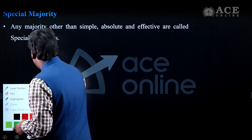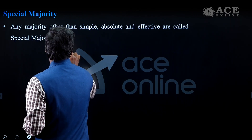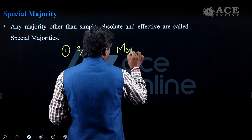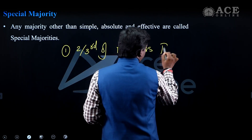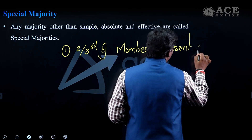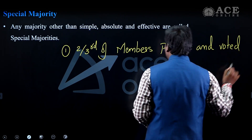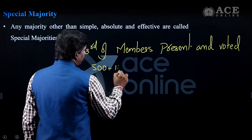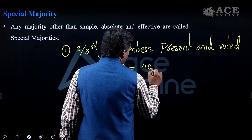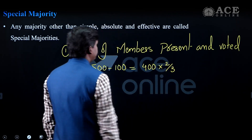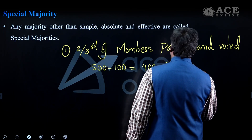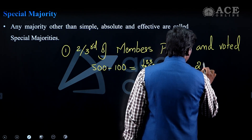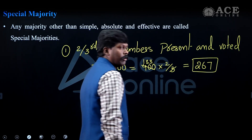For special majority type one — two-thirds of members present and voted — let us take an example. If total strength is 500 and 100 are absent, 400 are present. Then 400 into two-thirds equals approximately 267 members. So 267 members must vote in favour.